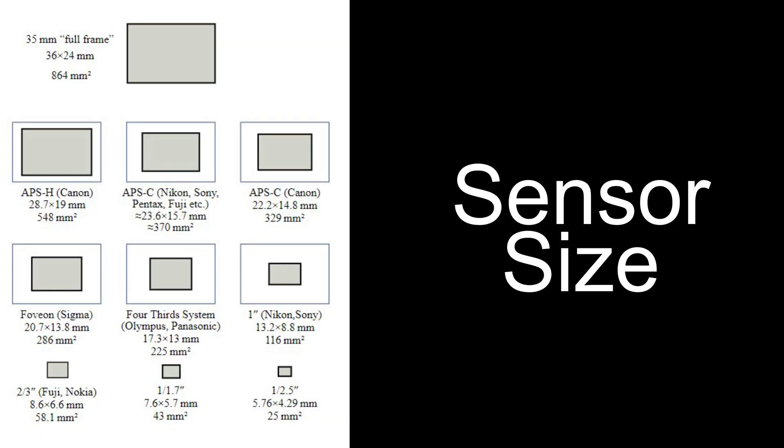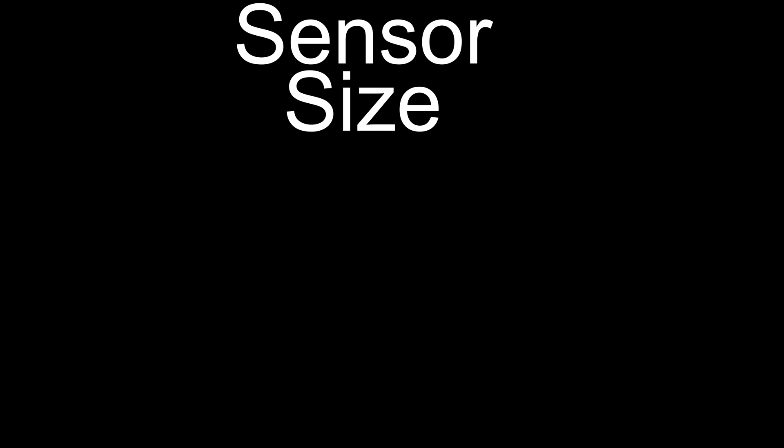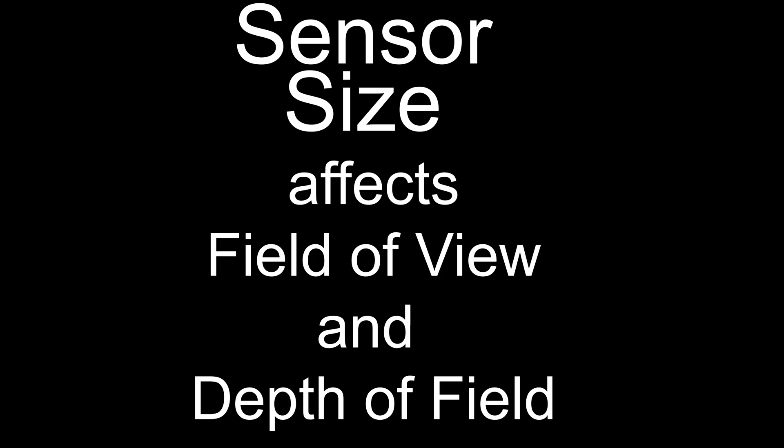Sensor size seems to be one of the most confusing pieces of terminology for new photographers to grasp. This is not because it's difficult to understand. Simply put, sensor size is the physical size of the digital sensor used to capture images. One reason it is so confusing is because it affects field of view and depth of field — two other pieces of terminology we will cover in future lessons.